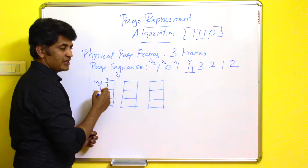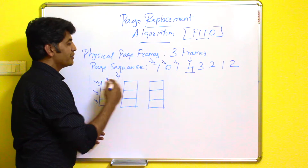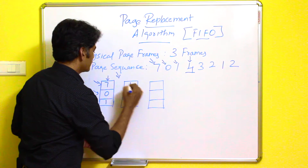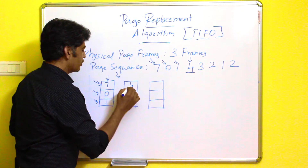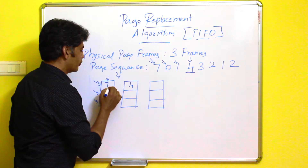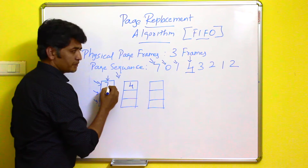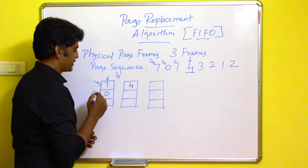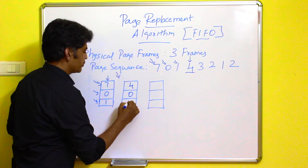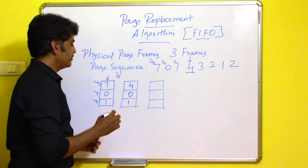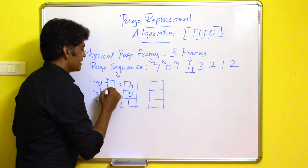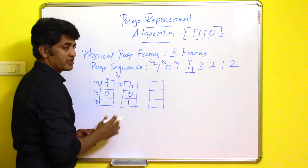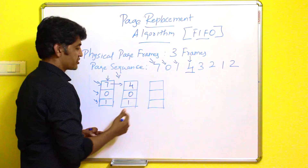Page number seven entered first, so it will be replaced by the newer one. Page number four will be placed in the space of page number seven. Now the frames hold four, zero, and one. This is how page number seven is replaced by four — this is how First In First Out is executed by the operating system.